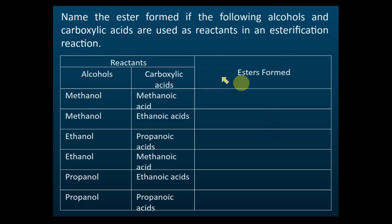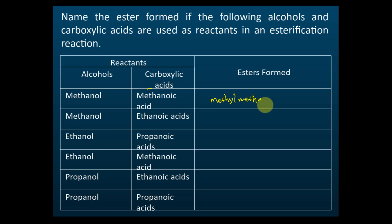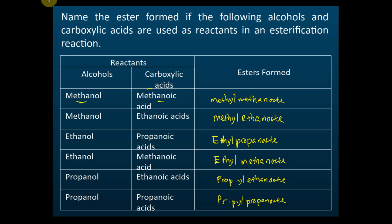Looking at this table: methanol with methanoic acid — what's the name of the ester formed? Methyl methanoate. The table also shows methyl ethanoate, ethyl propanoate, ethyl methanoate, propyl ethanoate, and propyl propanoate.